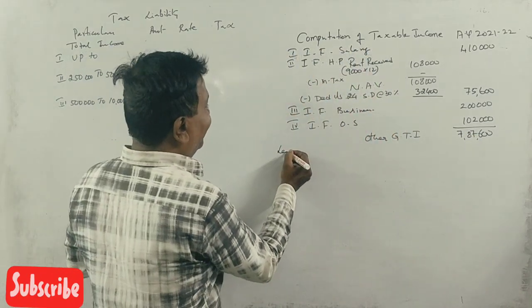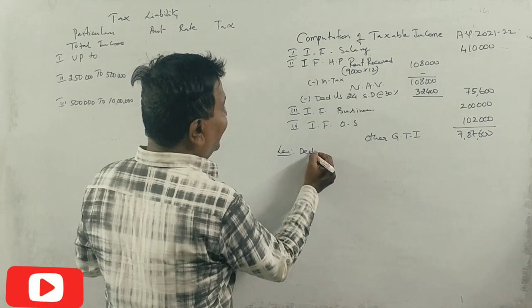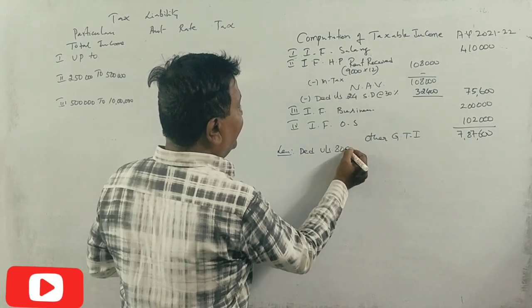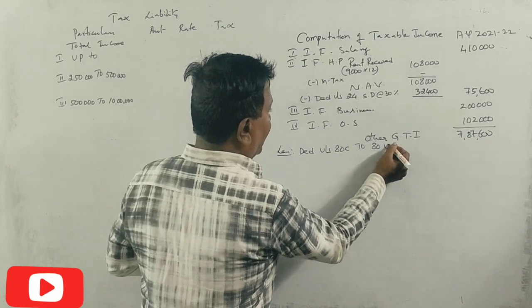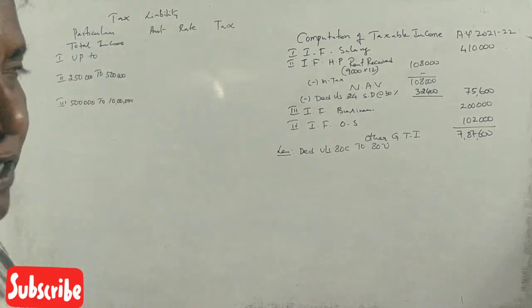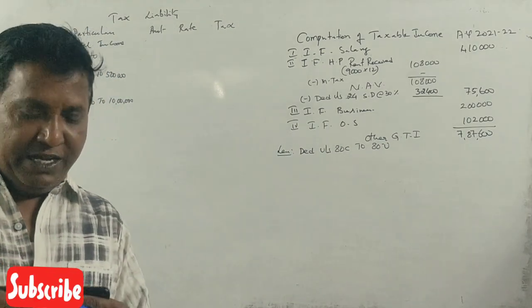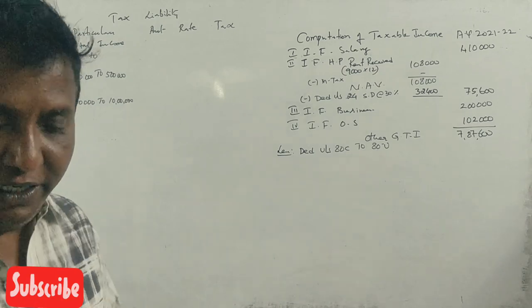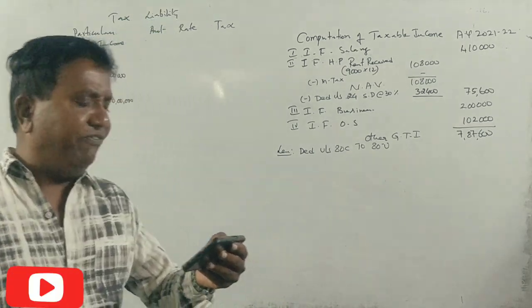Long-term capital gain and income from other sources, these are not included in the new tax regime. Under Section 80C to 80U, long-term capital gain cannot be included.